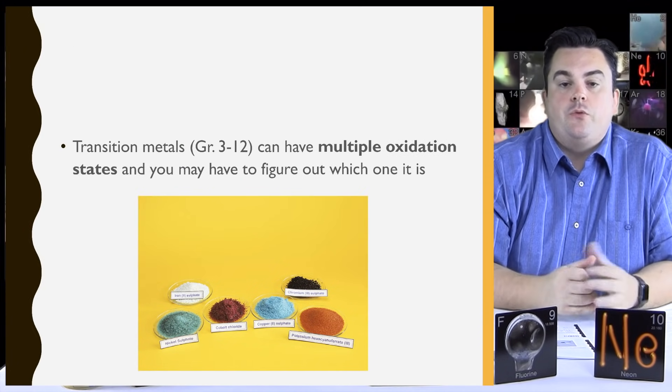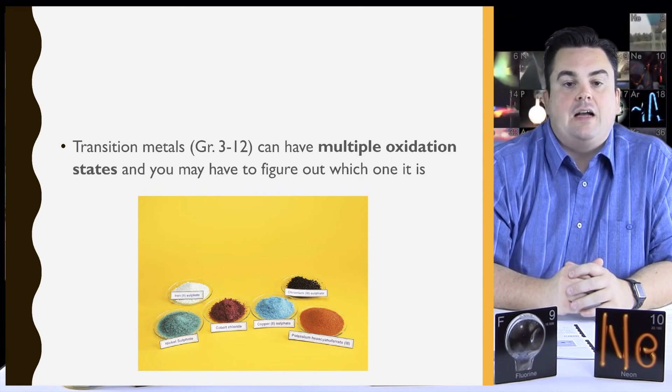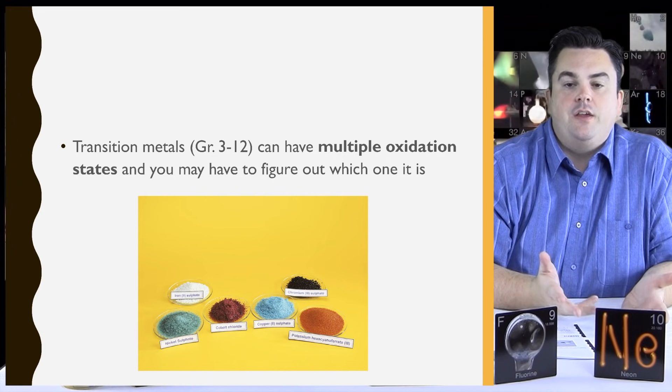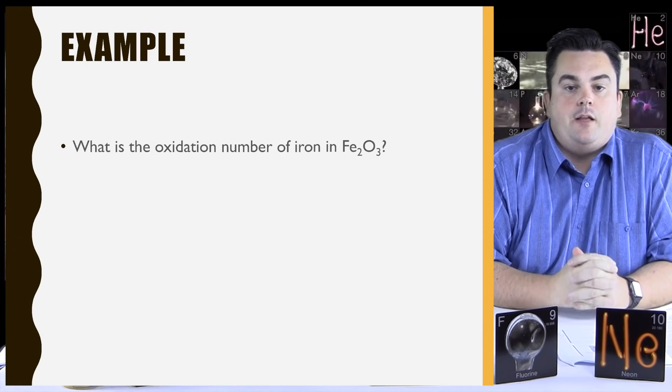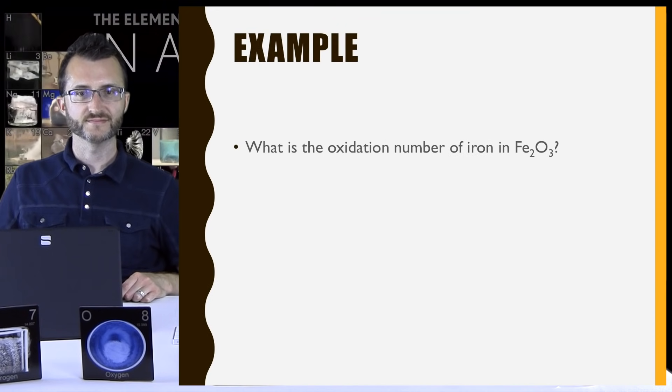Transition metals, groups 3 through 12, can have multiple oxidation states. And you may have to figure out which one it is. All right. We're going to do an example here. Shoo, are you ready? I'm ready. All right. What is the oxidation number of iron in Fe2O3? All right. So first thing we're going to do is look up iron on our periodic table.